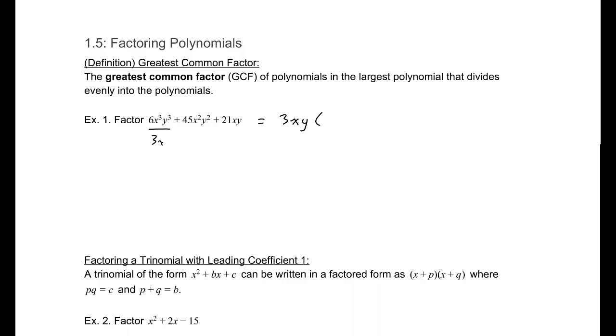Effectively, what we're going to do, and this is a little bit of an abusive notation, but effectively I'm dividing each of these terms by 3xy, and we'll have to use our exponent properties here. So for the first expression, that's going to be 6 divided by 3 or 2, we'll have an x² and a y². So a 2x²y². Next, 45 divided by 3, that will be a 15, 15xy. And the last one we get plus 7, the x and the y cancel out.